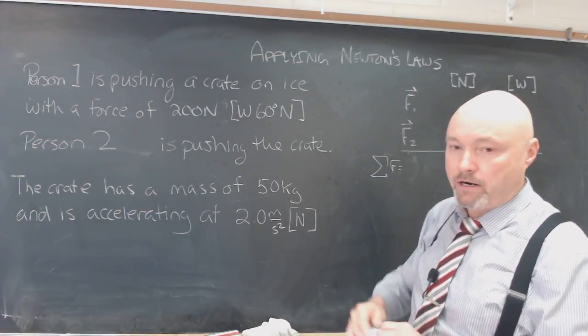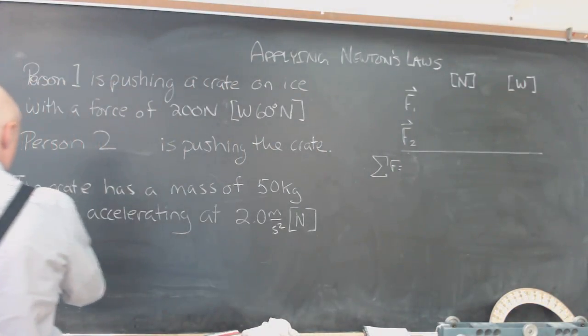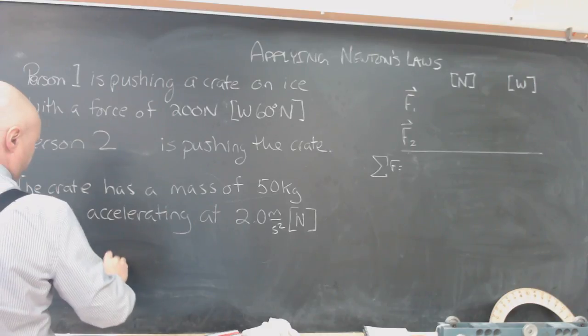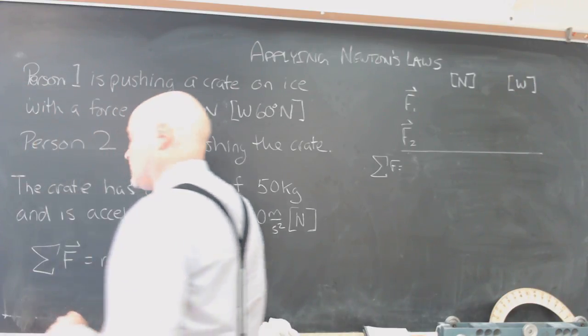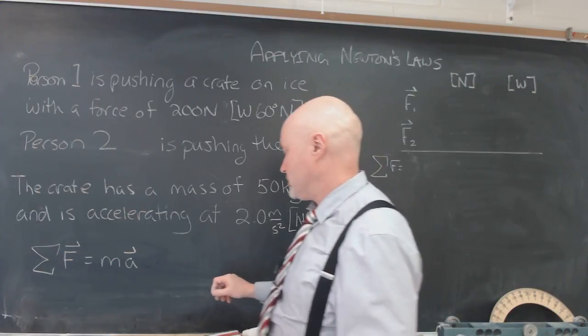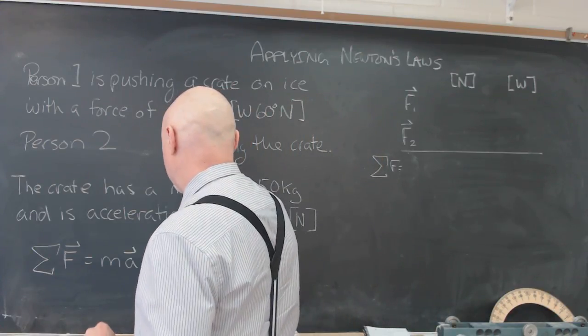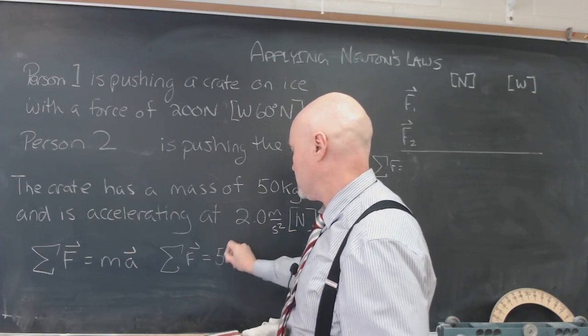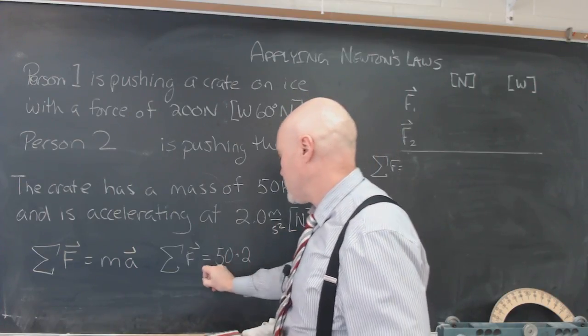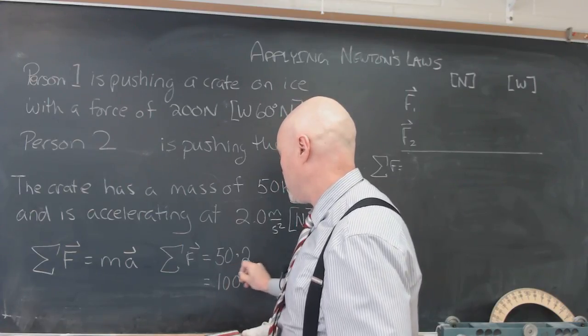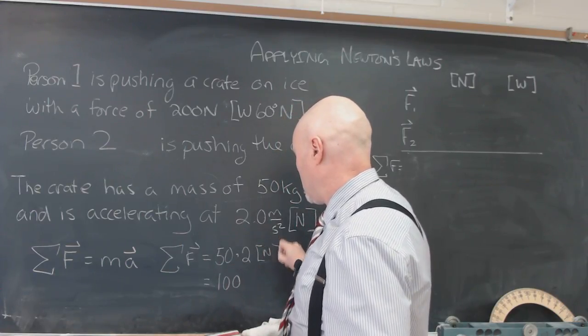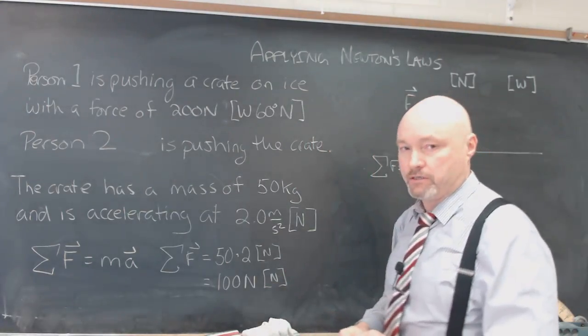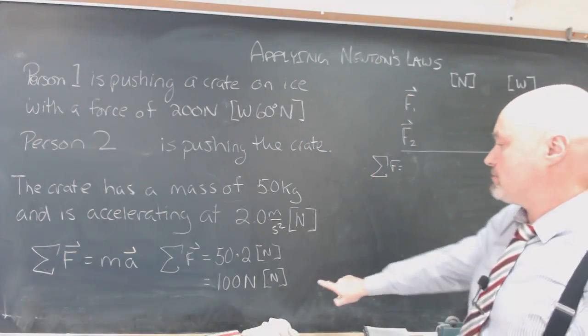So the third part of this expression is actually telling us what the sum of the forces are because Newton's second law also applies in two dimensions. And so the sum of the forces is going to be equal to 50 kilograms times 2 meters per second squared or in other words, we have 100 Newtons of force in the north direction. That's going to be the sum of all of our forces.